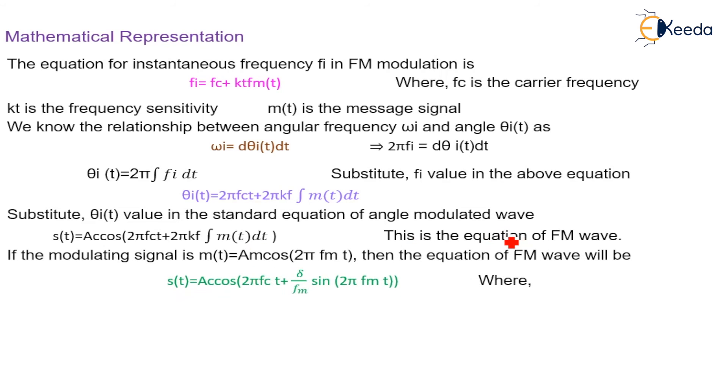Now, we will consider one case where the modulating signal is present. Suppose m(t) equal to Am cos(2π Fm t), that is the equation of modulating signal.